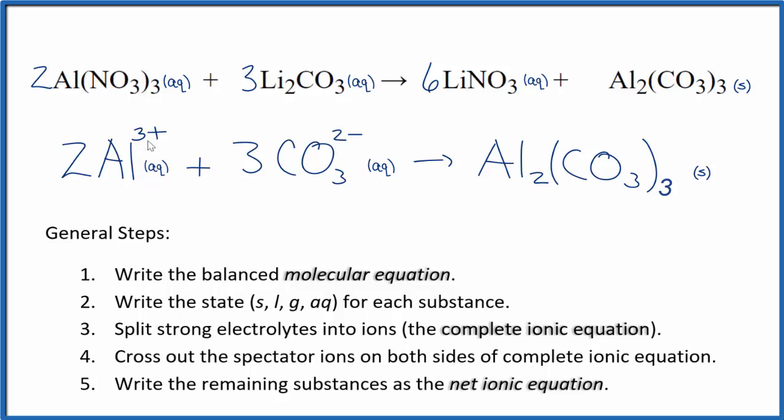Notice that charge is balanced. Two times three plus. That's six plus. Three times two minus. Six minus. So that adds up to zero. Over here, neutral compound, net charge of zero. Charge is conserved. And if you count the atoms up, you'll see they're balanced as well.